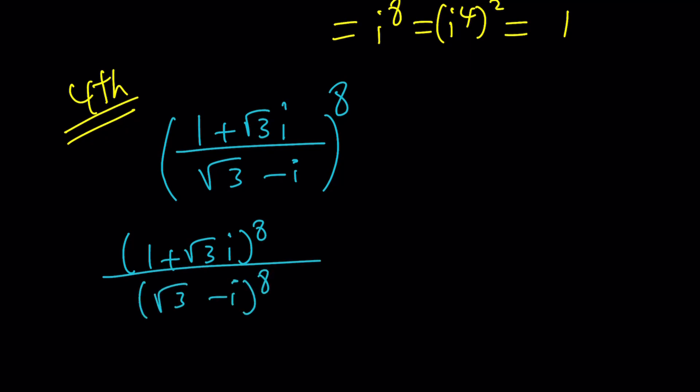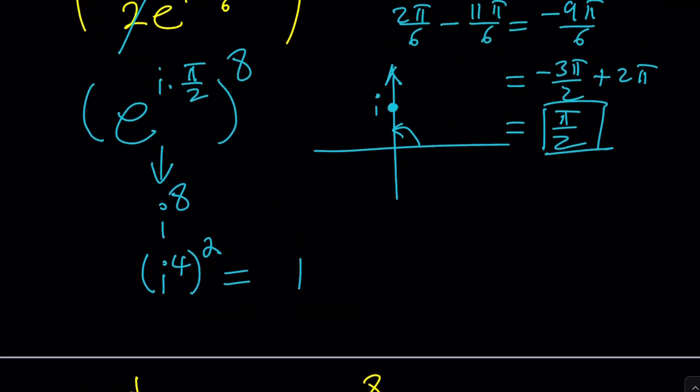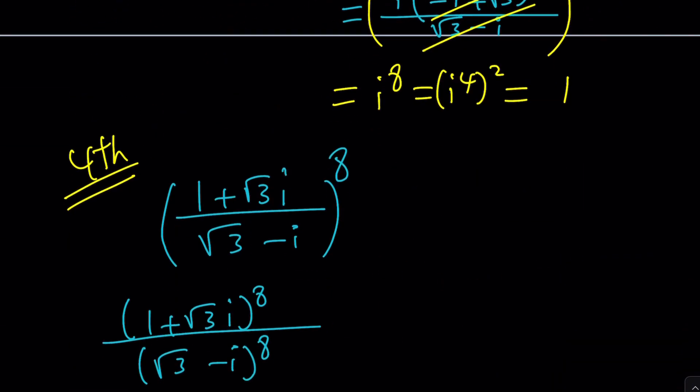Now at this point, we can proceed in different ways. We could definitely go ahead and use polar forms one more time and then raise each one to the eighth power. Remember, we had the π/3 and the 11π/6, right? So we can go ahead and do that.